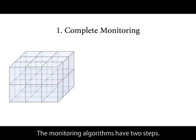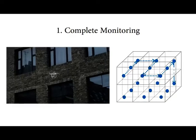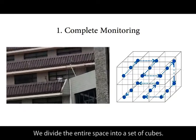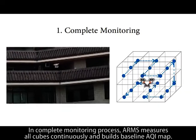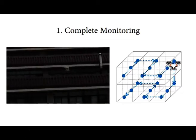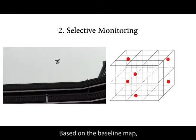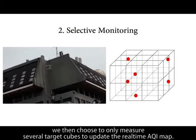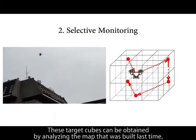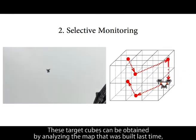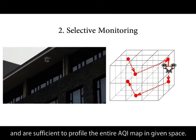The monitoring algorithms have two steps. The first step is complete monitoring, where we divide the entire space into a set of cubes. In the complete monitoring process, ARMS measures all cubes continuously and builds a baseline AQI map. The second step is selective monitoring. Based on the baseline map, we then choose to measure only several target cubes to update the real-time AQI map. These target cubes are obtained by analyzing the map built last time and are sufficient to profile the entire AQI map in the given space.